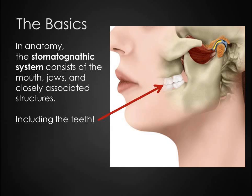Let's go back to basics. In anatomy, the stomatognathic system consists of the mouth, jaws, and closely associated structures, including the teeth. The temporomandibular joint is a modified hinge type of synovial joint made up of the condylar process of the mandible and the mandibular fossa of the temporal bone. This joint hinges and glides upon opening, also referred to as rotation and translation. The TMJ also moves from side to side, so the subject of occlusion has to take into account the joint movement and position and also the tooth relationships during those movements.